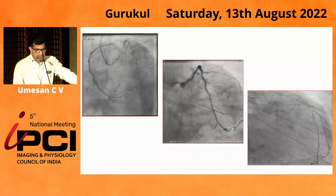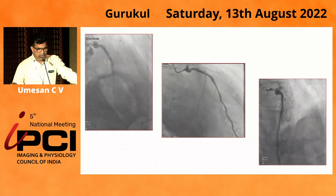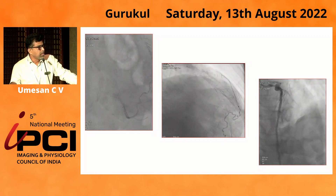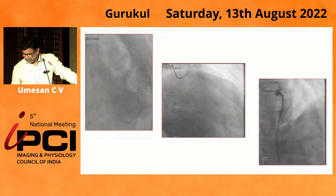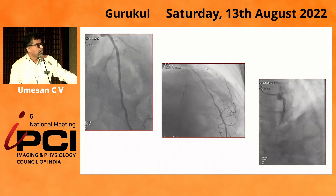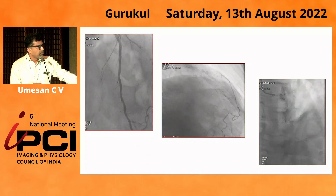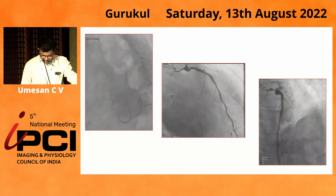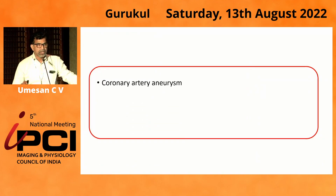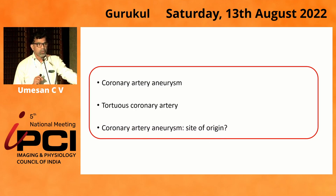The discussion is about the lesion in the proximal left coronary system. In the caudal views, if you look closely, you can see the left main and some narrowing with a bulge in the distal left main. There is a superimposed vessel flowing down that bulged area. So are we dealing with a coronary artery aneurysm, or is it simply a tortuous coronary artery? And if it is a coronary artery aneurysm, what is the site of origin?